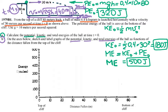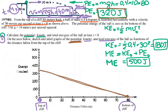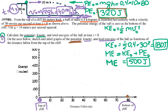In our graph, the x-axis represents vertical distance fallen from the top of the cliff down to the bottom — 80 meters. At 80 meters the potential energy equals zero. The potential energy starts at 320 joules at the top and decreases linearly down to zero. I'll draw this in brown.